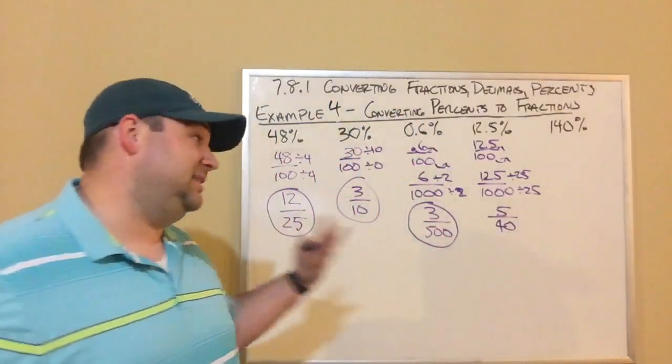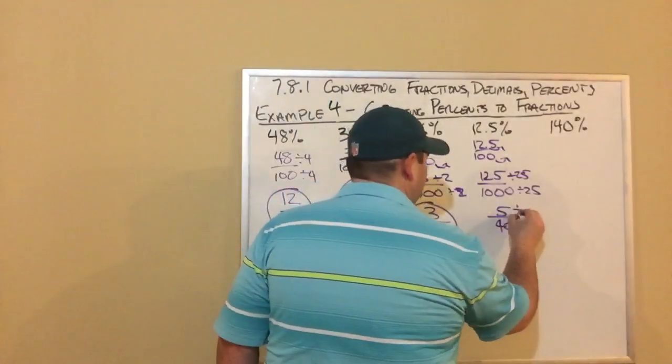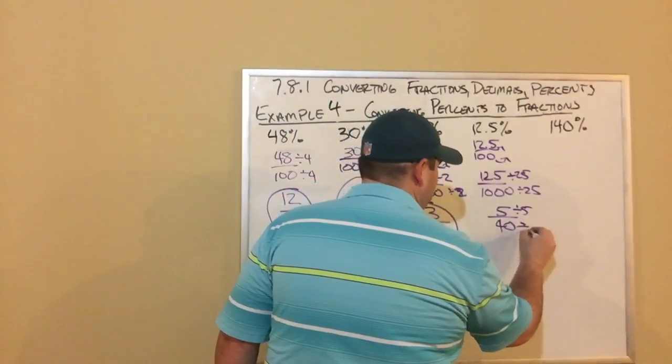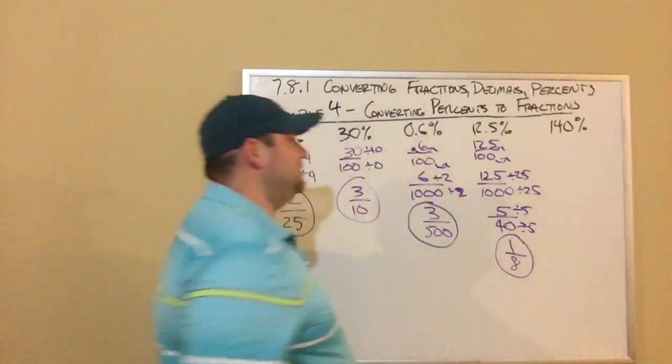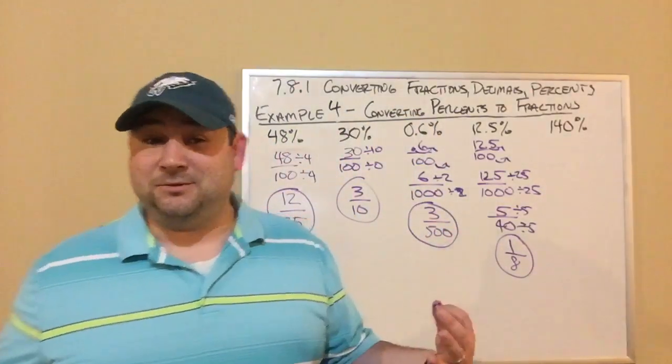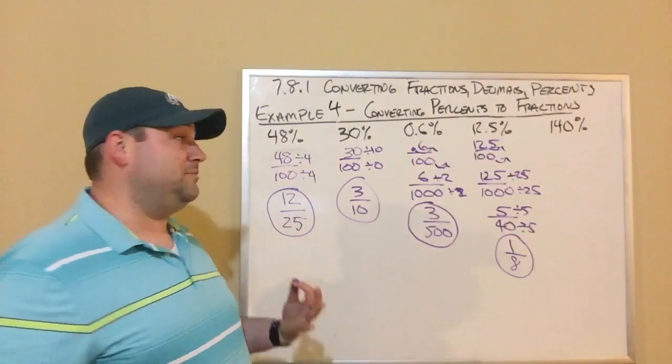That's not simplified. I can look at that now - oh, 5 goes into both of those. So if I divide both by 5, I've got 1/8. So 12.5 percent is 1/8. You take an eight question quiz, you get one right, you're going to get 12.5 percent.